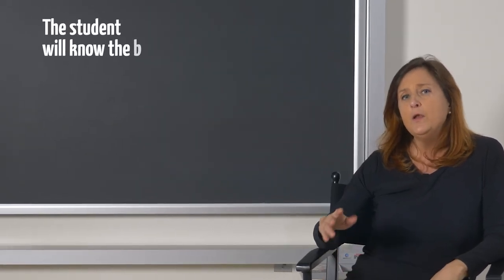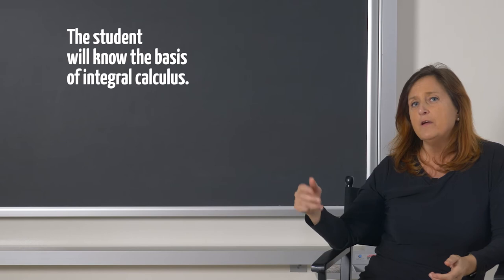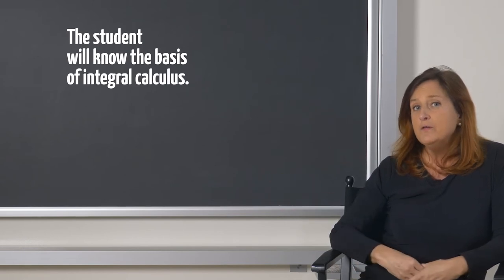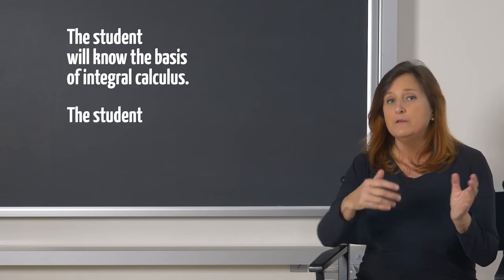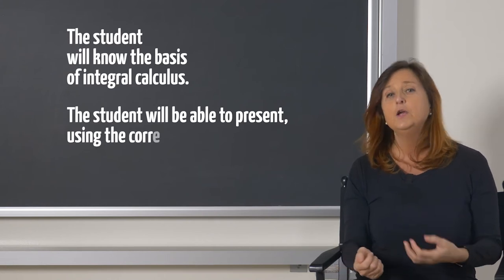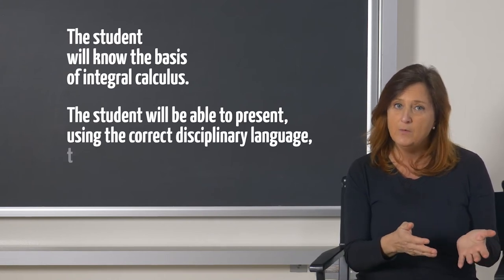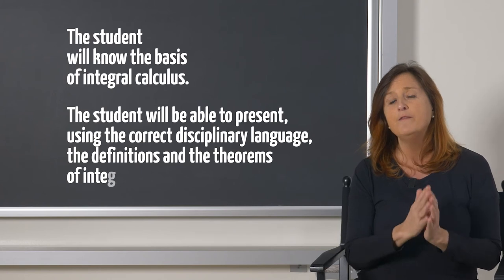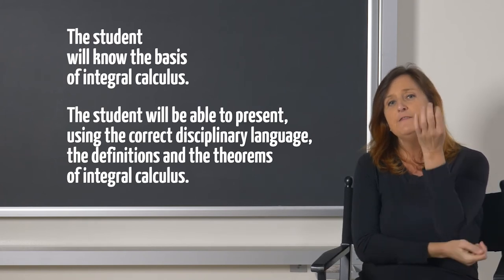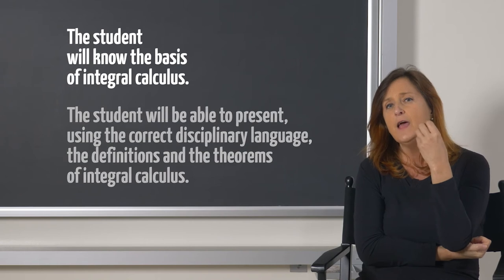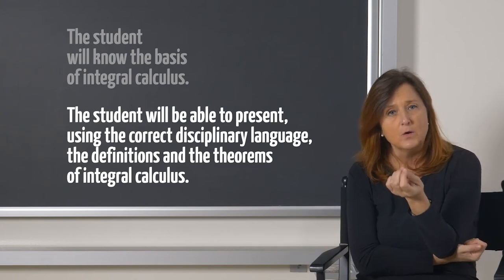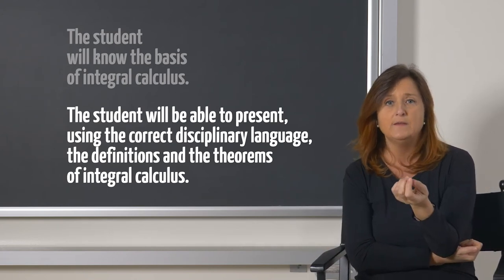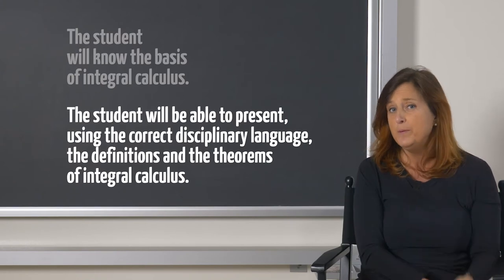Let's try with an example. I could simply say the student will know the basis of integral calculus. Or I could venture into a more articulate intended learning outcome and say, for example, the student will be able to present, using the correct disciplinary language, the definitions and the theorems of integral calculus. If I just say that students have to know something, I won't be able to observe it. This is the reason why we need to formulate intended learning outcomes in terms of observable performances.